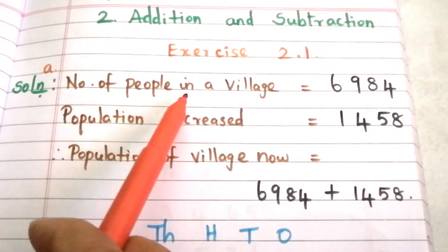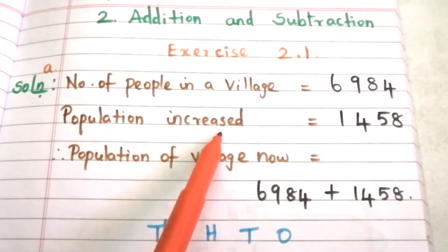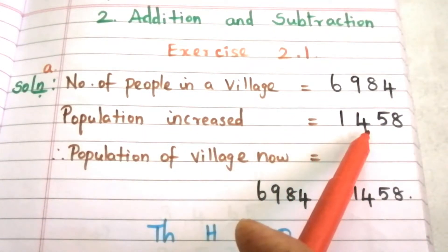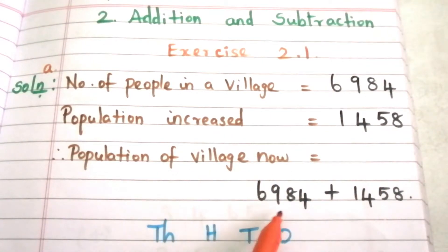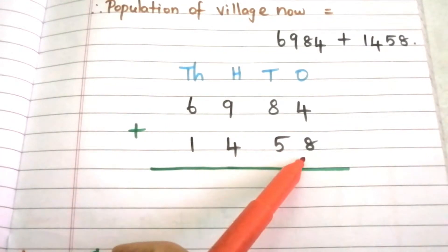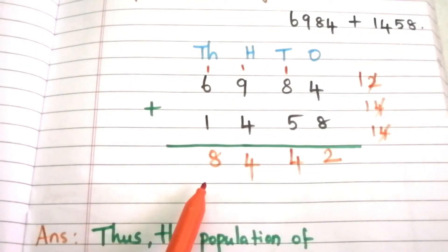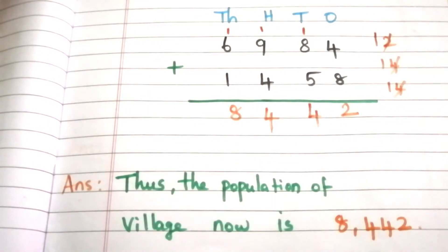Number of people in a village = 6,984. Population increased = 1,458. Therefore, population of village now = 6,984 + 1,458. Writing the data vertically and starting addition from the ones place, we get 8,442. Thus, the population of the village now is 8,442.